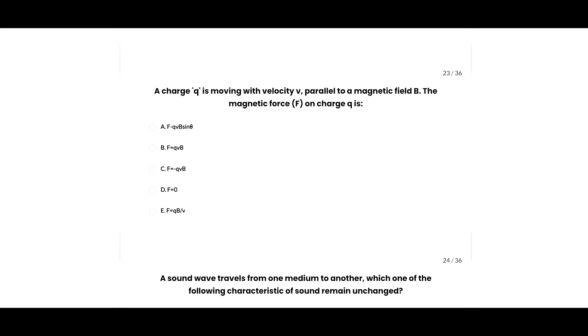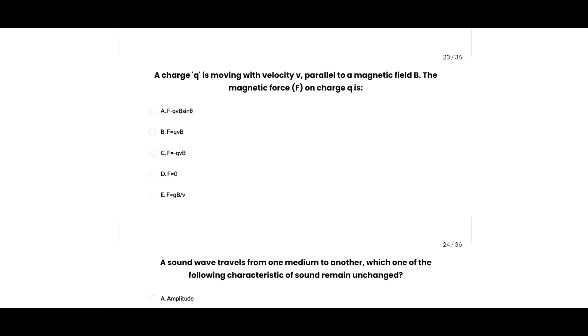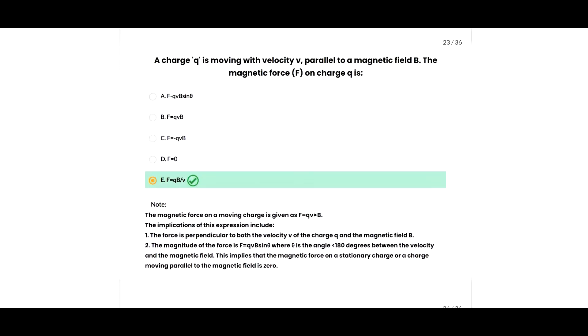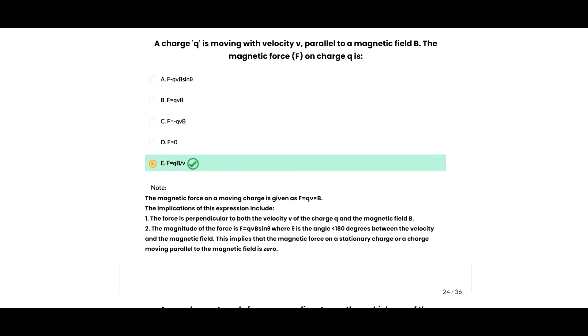Next question: a charge q is moving with velocity v parallel to a magnetic field B. The magnetic force F on charge q will be zero, because the magnetic force on a moving charge is given as F equals qvB sin theta. The force is perpendicular to both the velocity v and magnetic field B. The magnitude is qvB sin theta. This implies that the magnetic force on a stationary charge or a charge moving parallel to the magnetic field is zero, so B option is correct.